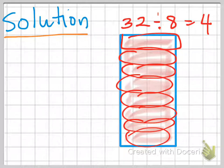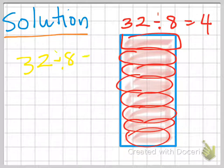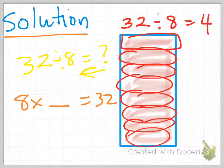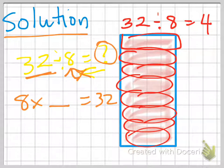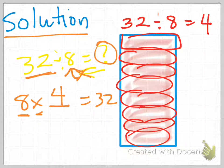But if you still need help, you can go backwards. If you weren't sure, take 32 divided by 8 equals what, and go the opposite way — in other words, 8 times what equals 32? You're looking for the number that when multiplied gives you 32. If you know your multiplication facts, 8 times 4 equals 32, so you have multiple ways to help you solve a division problem.